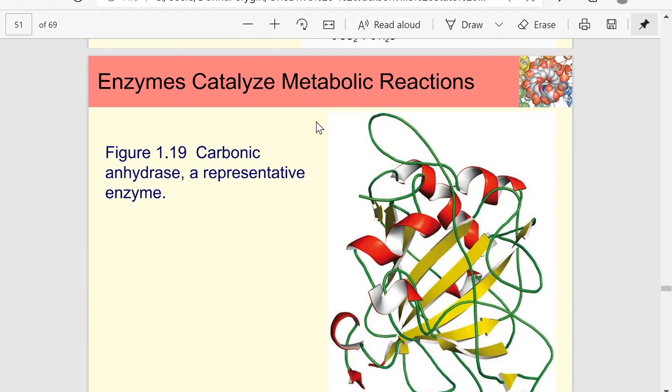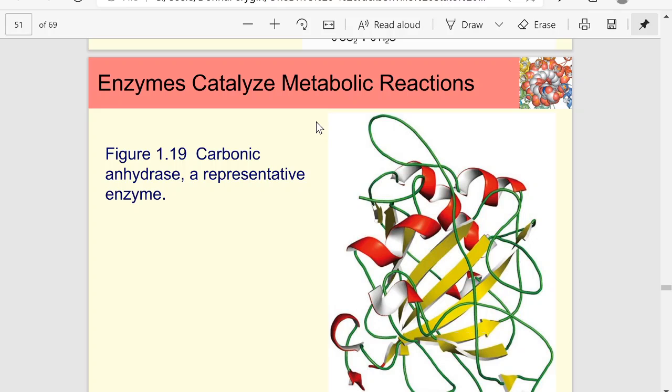But in order to catalyze metabolic reactions, we need enzymes. Enzymes are these large protein molecules that have binding or active sites that catalyze metabolic processes. In this case, we have carbonic anhydrase as a representative enzyme that catalyzes the conversion of bicarbonates to carbon dioxide.